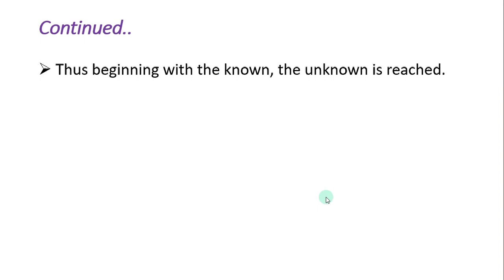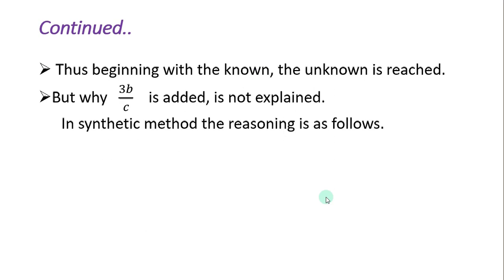Thus, beginning with the known, the unknown is reached. But why 3b/c is added is not explained in this method. So in synthetic method, the reason is as follows. A is true, B is true, and C is true.